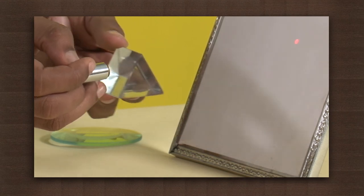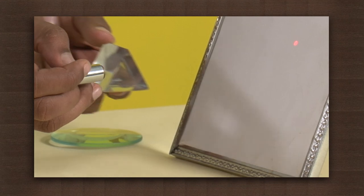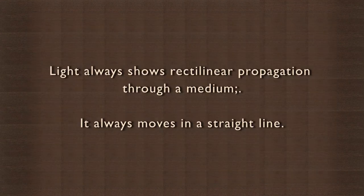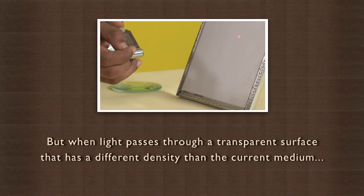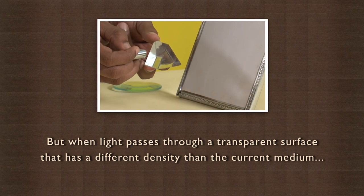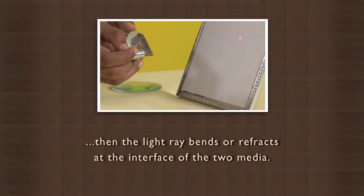Now you know that light rays can be made to bend. Light always shows rectilinear propagation through a medium, which means that it always moves in a straight line. But when this light passes through a transparent surface that has a different density than its current medium, then the light rays bend or refract at the interface of the two media.